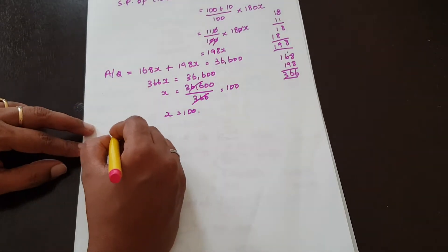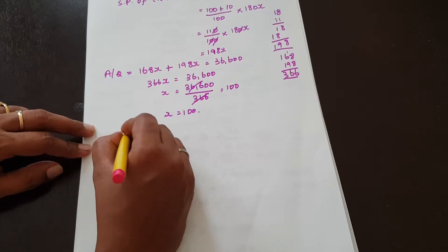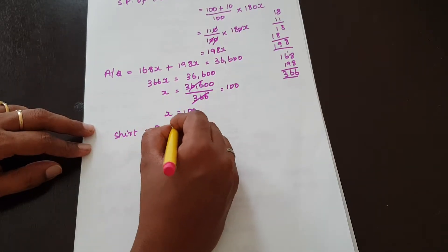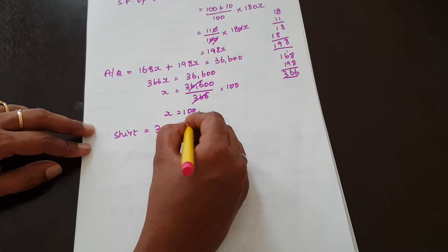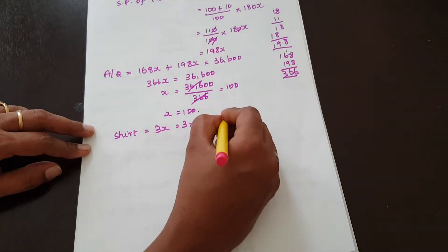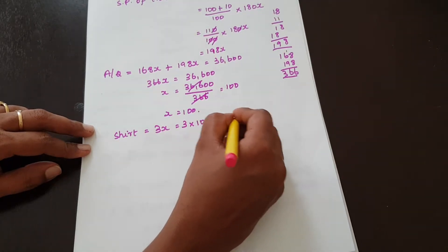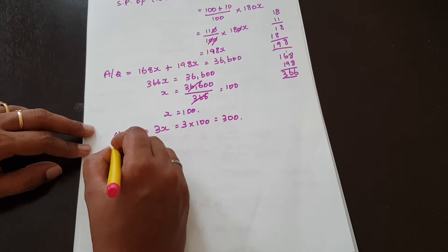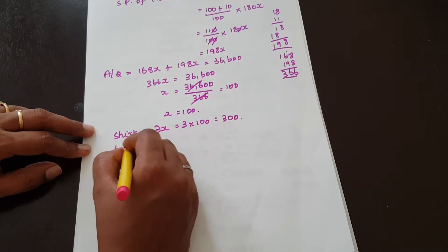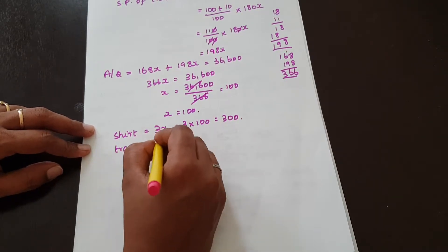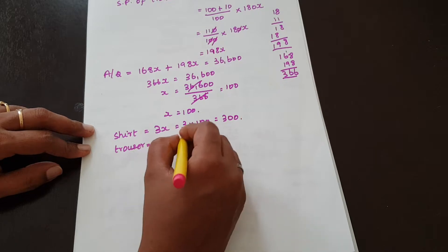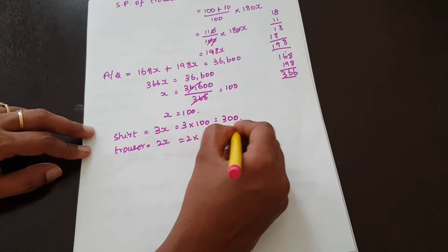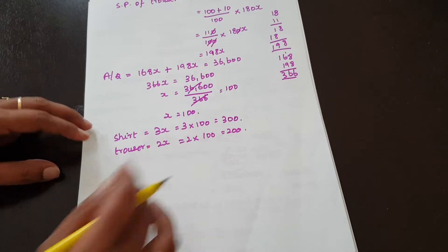So X = 100. Shirt material = 3X = 3 × 100 = 300 meters. Trouser material = 2X = 2 × 100 = 200 meters.